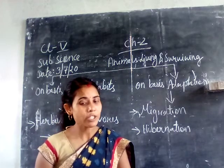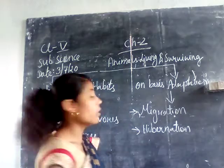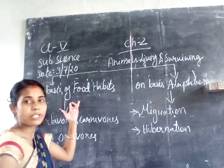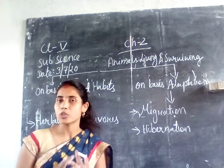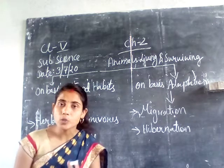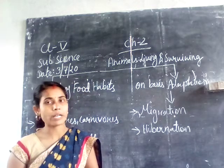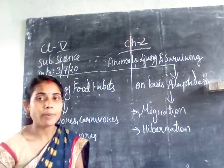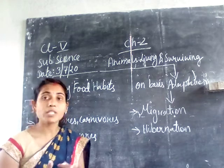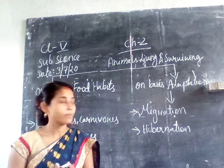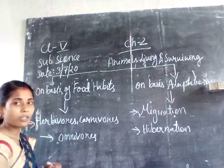Good morning to all the Class 5 students. This is your second video of Chapter 2, which is 'Where Animals Living and Surviving.' In the previous video we talked about animals being classified into vertebrates and invertebrates. Vertebrates were further classified into 5 groups, and invertebrates are animals like insects and worms which do not have a backbone. Now we have to talk about animals on the basis of their food habits and adaptation — migration and hibernation.